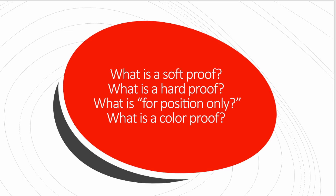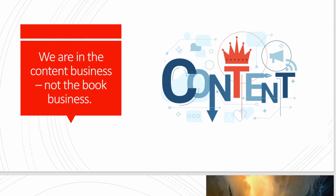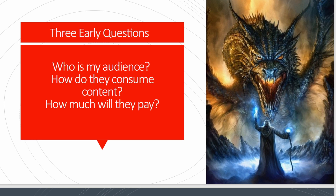We're in the content business. Three early questions to ask: who is your audience, how do you want your content consumed, and how do your customers want to consume it? Some authors say they'll just do e-books or just do paper. But the industry has changed so much in the last 20 years that people want to consume content the way they want to. Every author needs to consider all formats — e-books, audio books, paper, hardcover, softcover — all of those types of things.